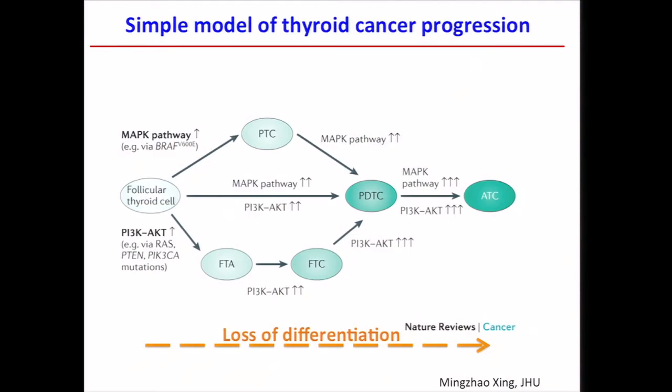We talk about differentiated carcinoma and undifferentiated or anaplastic carcinoma with poorly differentiated in the middle — a foundational concept for thyroid cancer. When TCGA started this, with 85 percent of cases being papillary, it became clear we needed to focus on papillary. So our project is restricted to papillary thyroid carcinoma.